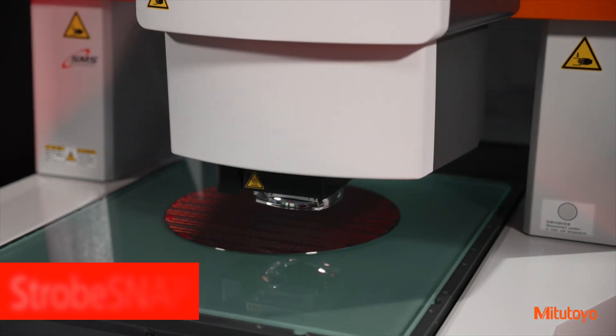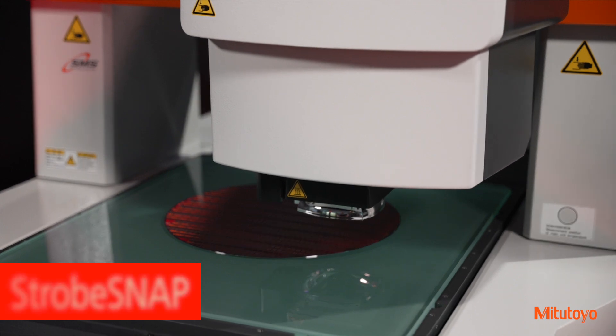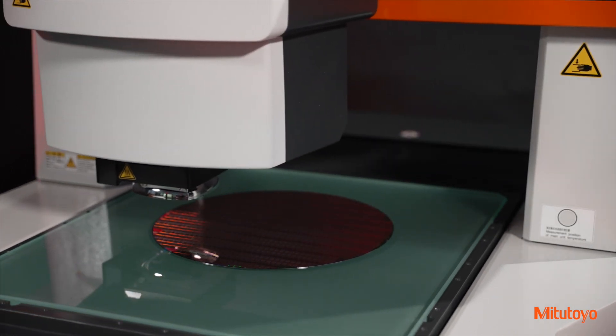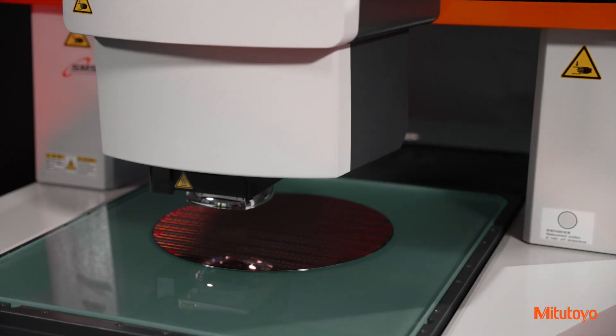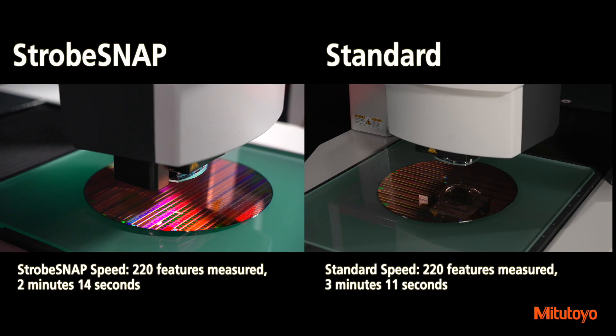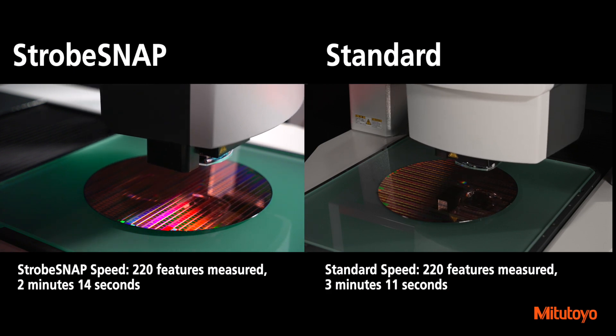Camera measurement speed has been significantly improved with the new strobe snap feature. Strobe snap combines high-speed stream feature measurements with the traditional QuickVision high-speed motion between features. Depending on part features, strobe snap can measure up to 45% faster than traditional measurement modes.